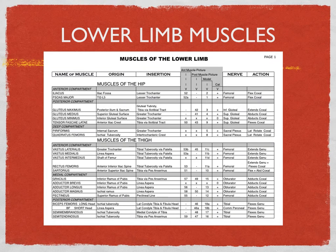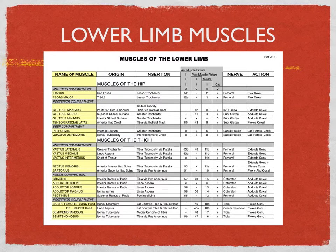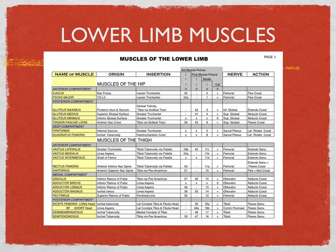Number one, when you study this list, remember this list is just a list. You really want to focus on images, on pictures. The beginning of this is to learn the names of each and every muscle. You want to identify each and every muscle on the lower limb and be able to name each one. You have no business learning anything else on this list until you've done that.